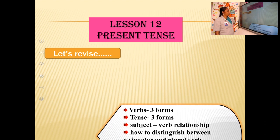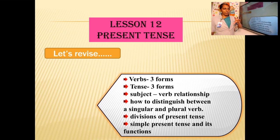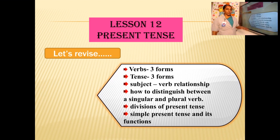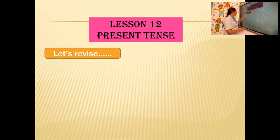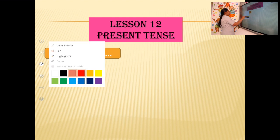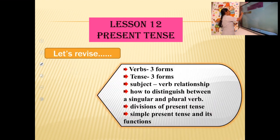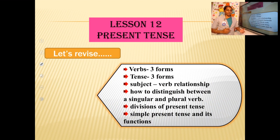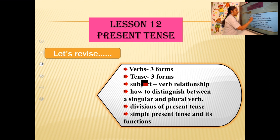So we talked about many things and mainly we discussed verbs. A verb has got three forms. Tense has also got three forms. What are they? Present tense, past tense, and future tense.